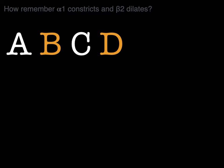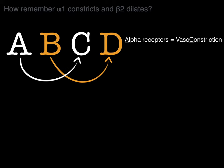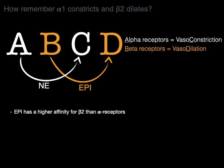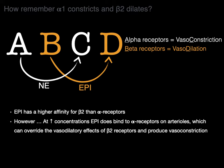How do I remember that alpha-1 receptors cause vasoconstriction and beta-2 receptors cause vasodilation? I remember the ABCs and Ds — A goes to C and B goes to D — where alpha receptors cause vasoConstriction via norepinephrine and beta receptors cause vasoDilation via epinephrine. Now, epinephrine has a higher affinity for beta-2 receptors in contrast to alpha receptors. However, at high concentrations, epinephrine does bind to alpha receptors on arterioles, which can override the vasodilatory effects of the beta-2 receptors and cause vasoconstriction. With epinephrine, concentration matters.